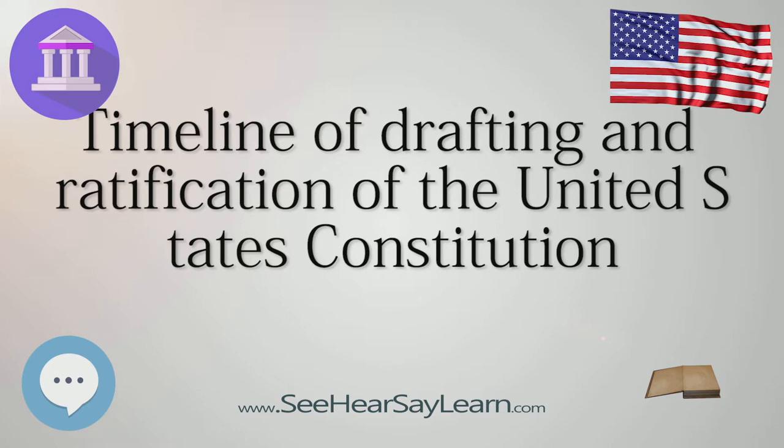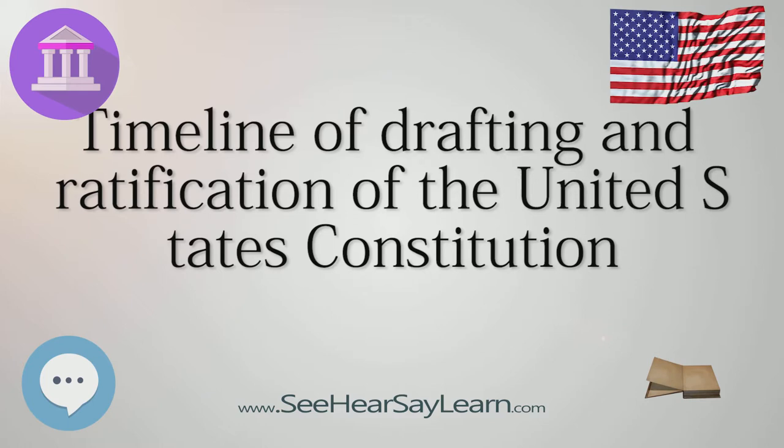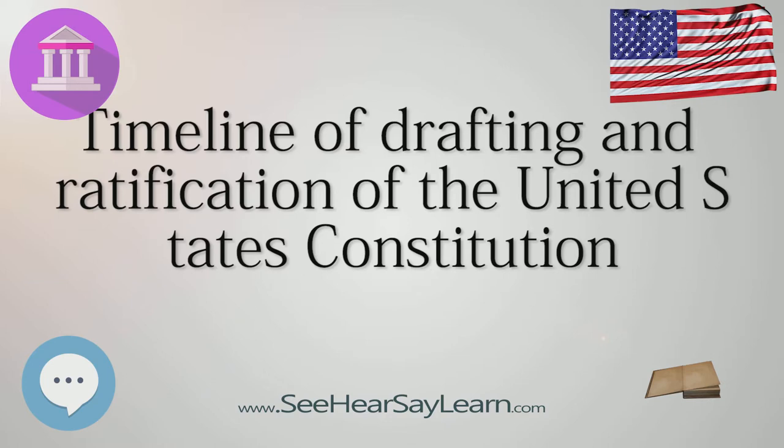July 21–August 2: First ratifying convention held in North Carolina. With the hope of effecting the incorporation of a Bill of Rights into the frame of government, delegates vote 184-84 neither to ratify nor to reject the Constitution.